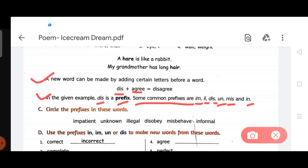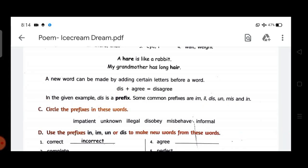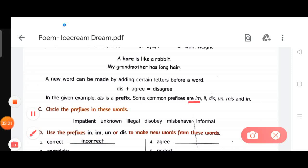There are some common prefixes as you can see here: im, ill, dis, un, mis, and in. Now look at next exercise C. Circle the prefixes in these words: impatient, unknown, illegal, disobey, misbehave, and informal. So here you can see im is the prefix here, in the second word un, in the third ill, dis, mis, and in.